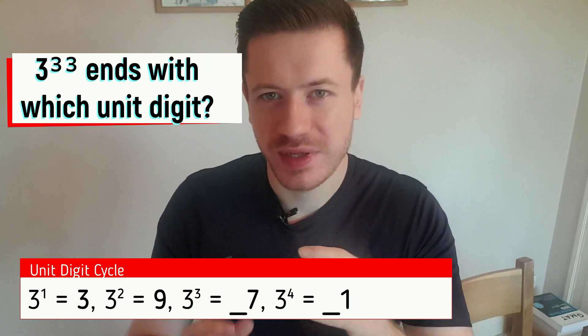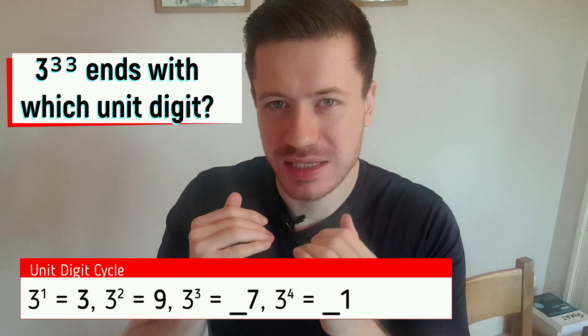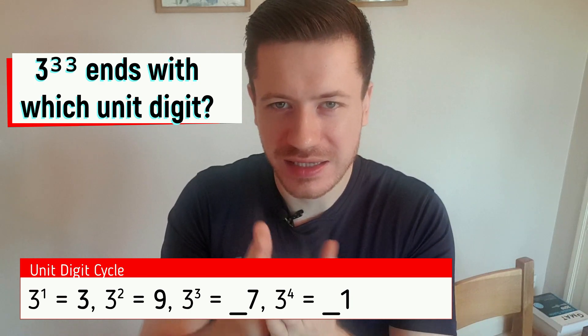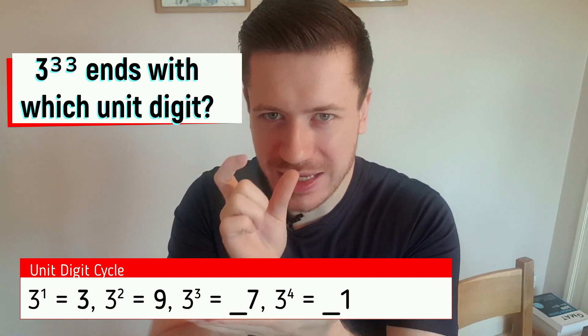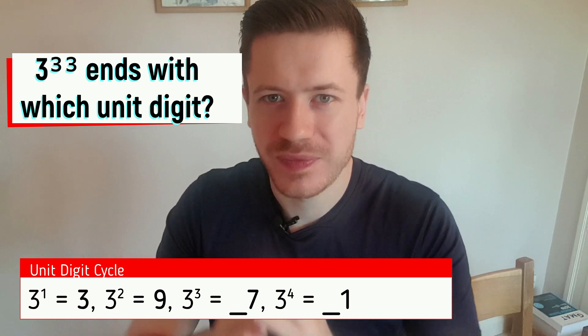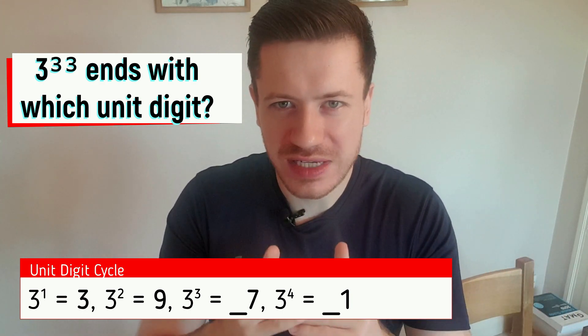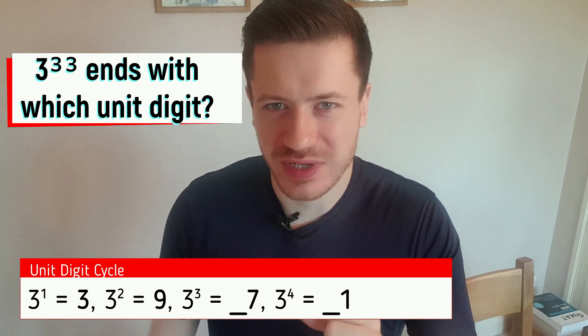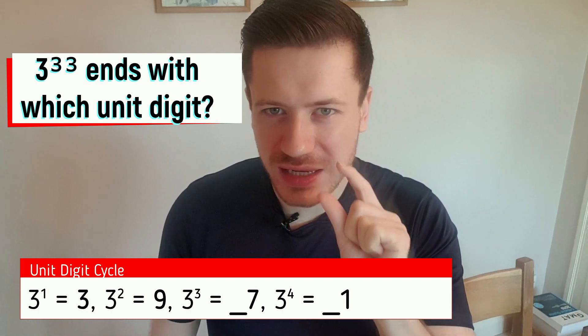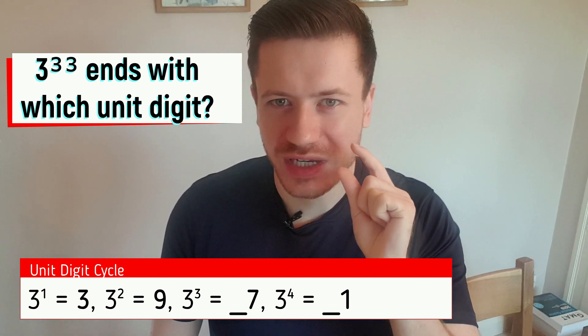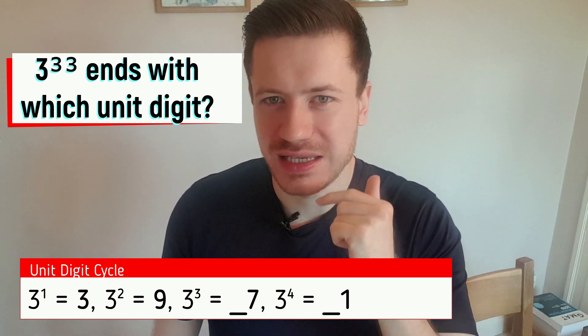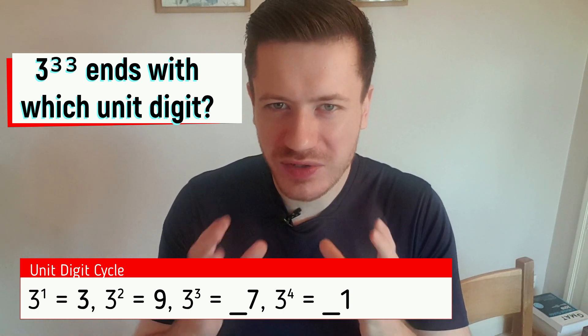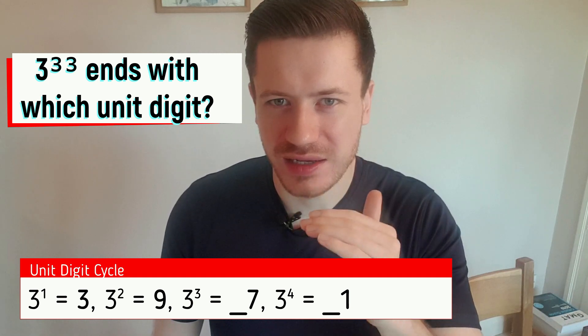Three to the power of four would be 27 times three. Now, you might know that is 81. But forget the 80. Just focus on 27 ending in a seven. And what's seven times three is 21. So three to the power of four is going to end in a one. You didn't need to know that 27 times three is 81. So notice the pattern so far. Three, nine, seven, one.